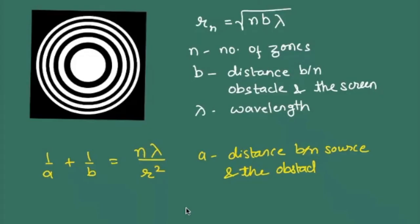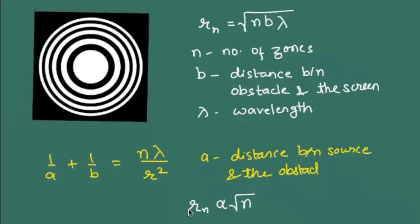For a zone plate, we need radius proportional to √n. If I draw concentric circles each with radius √n, my first radius is √1, second would be √2, √3, √4, and so on up to √n. If I see my first zone, this is transparent to light, zone 2 is blocked, and zone 9 is transparent.